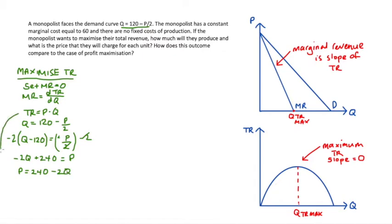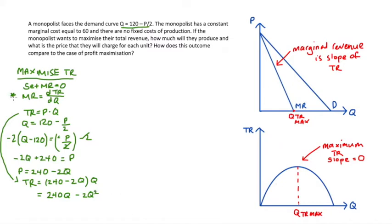Substituting P equals 240 minus 2Q into the total revenue function, we get total revenue equals (240 minus 2Q) times Q. Opening out the brackets, total revenue equals 240Q minus 2Q squared. Taking the derivative gives us marginal revenue equal to 240 minus 4Q. I have a video on taking derivatives that I'll link to below if that step was confusing.